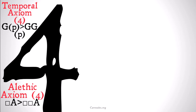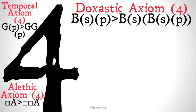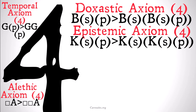Axiom 4, as we've seen it before, kind of has to do with doubling strong operators — saying that a single strong operator implies a doubled strong operator. We've seen it before in alethic modal logic, in temporal modal logic, and a close relative in deontic modal logic.